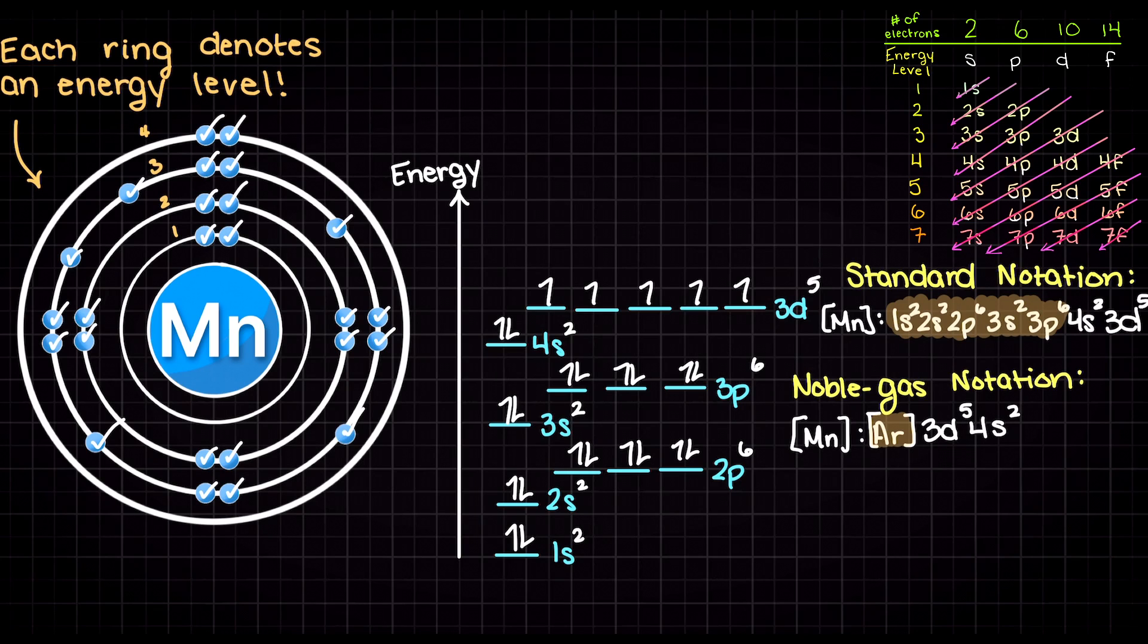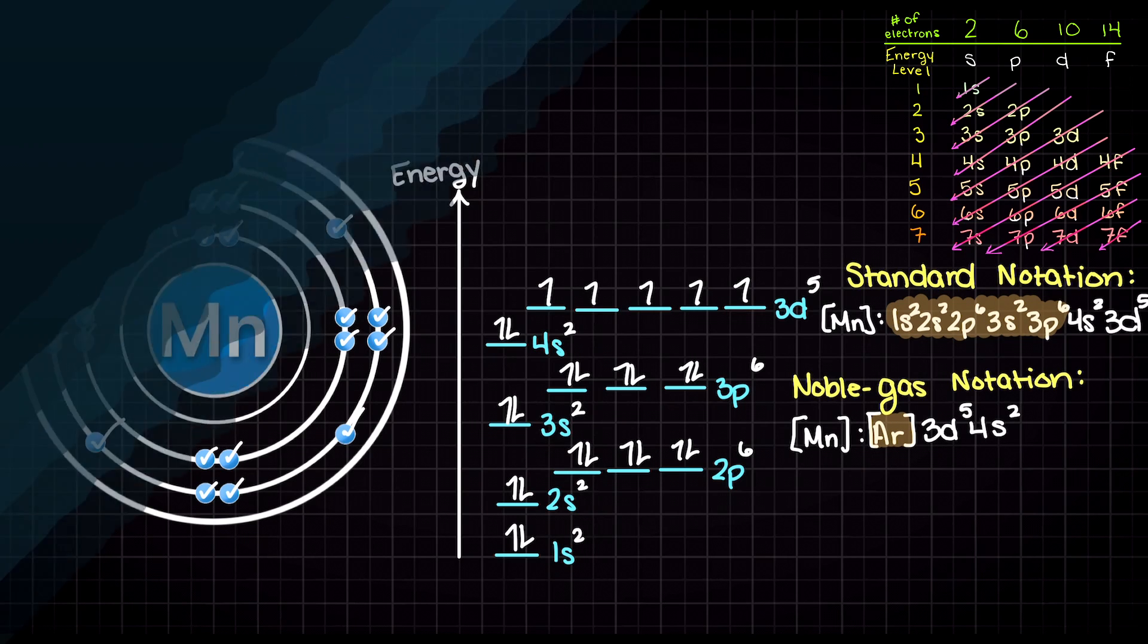We have now solved for the ground state electron configuration of manganese in the standard and noble gas notation. I hope that this video helped your understanding of how to solve for manganese's electron configuration.